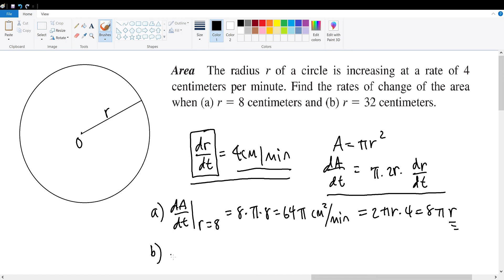And for part b, we just apply 32 for r instead of 8. So dA over dt, when r is equal to 32, will be equal to 8 times pi times 32, which is the same thing as 256 pi centimeters squared per minute, meaning that when the radius is equal to 32 centimeters, the area of this circle will be changing at a rate of 256 pi centimeters squared per minute.